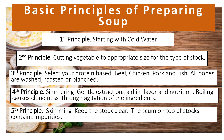For the second principle, you need to understand the importance of cutting vegetables to the appropriate size for the type of stock. The size of the cut helps the maximum flavor to be extracted. For example, a fish stock only simmers for half an hour or 30 minutes, so the cut should be julienne — thin strips, 1/4 inch thick to 2–3 inches long. The correct vegetable cuts are important when preparing a soup.